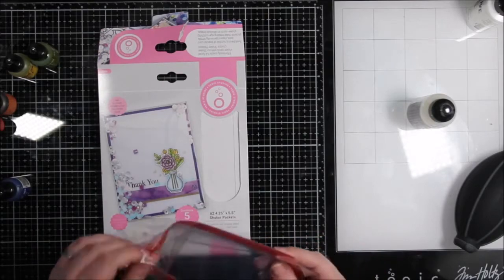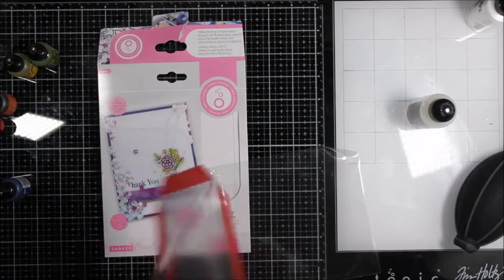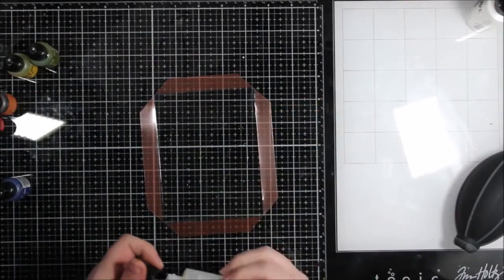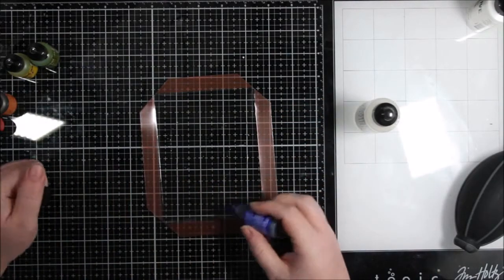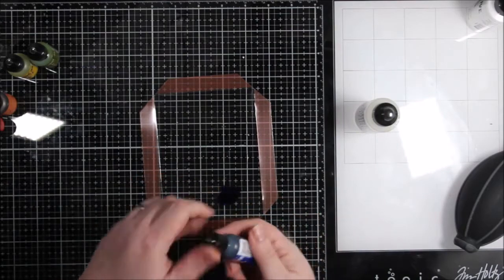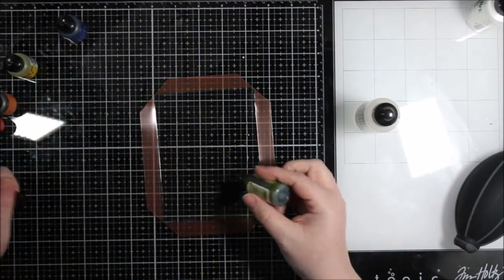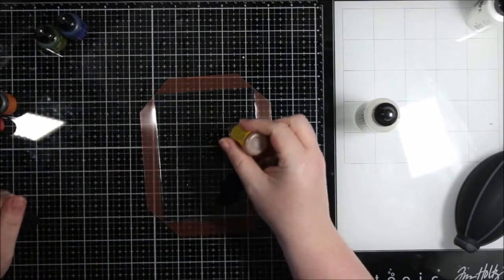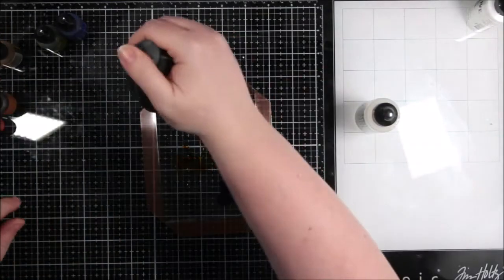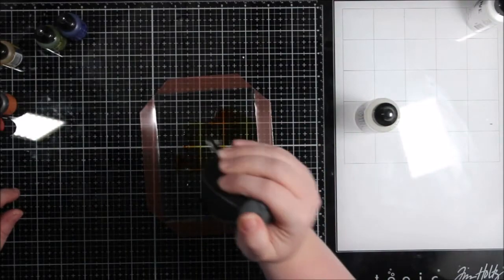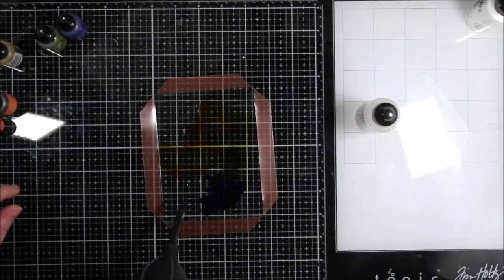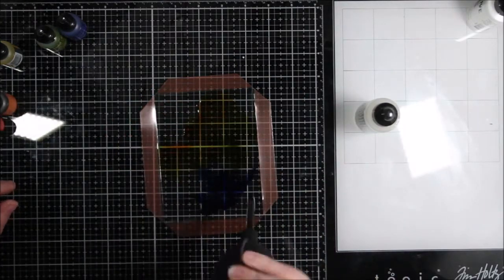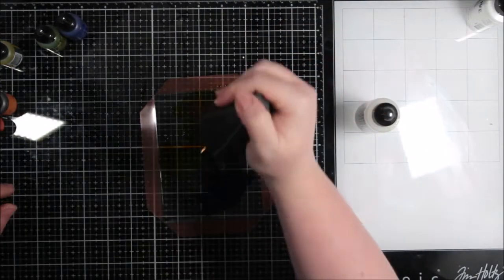And then here is where I decided to completely experiment, beyond what is traditional alcohol ink stuff. And I am using these shaker pockets by Tonic Studios. They're full card shaker pockets. These have the adhesive right on them. And I thought these would work for alcohol ink because they are non-porous and they are a slick surface. And that is what alcohol ink likes.